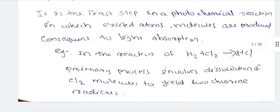For example, H2 + Cl2 in the reaction to an activated state. In the first step of a photochemical reaction, it will form chlorine radicals.